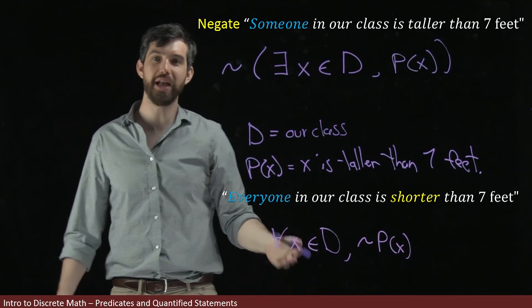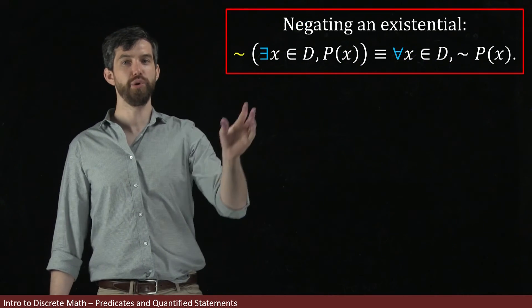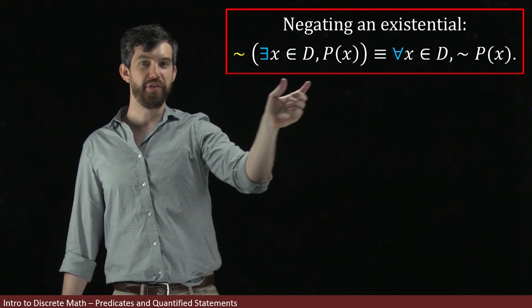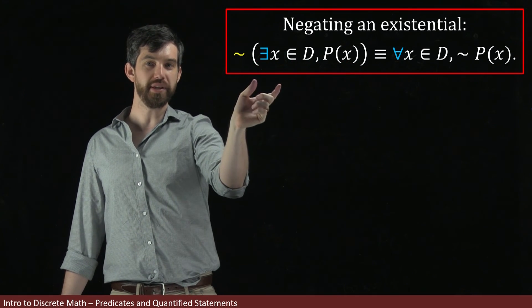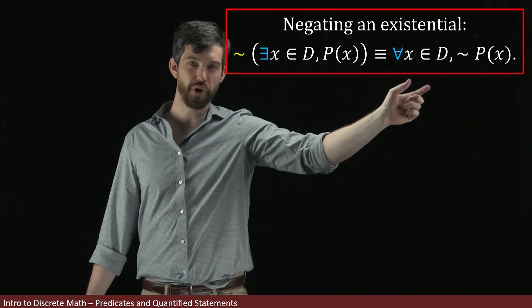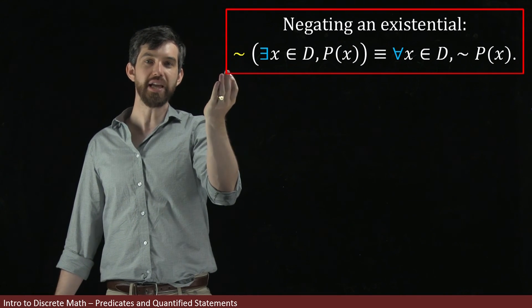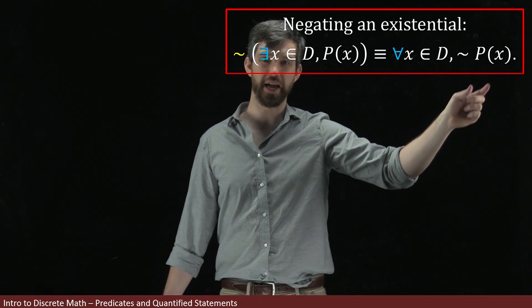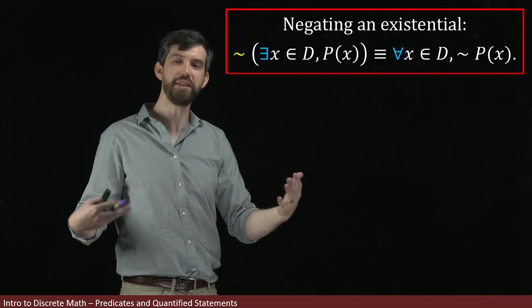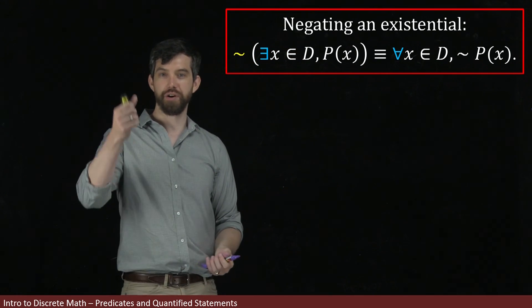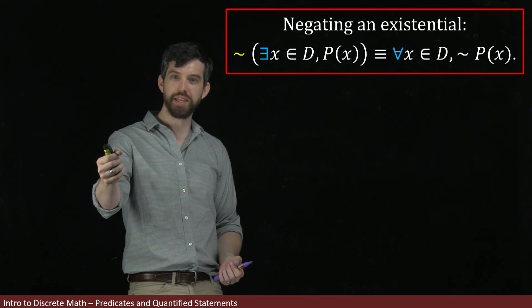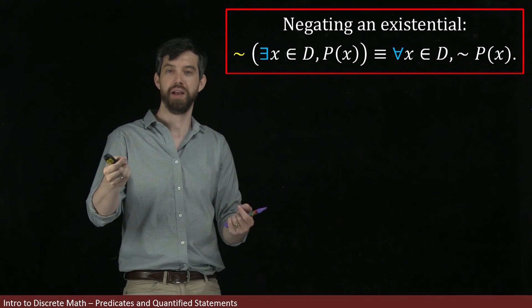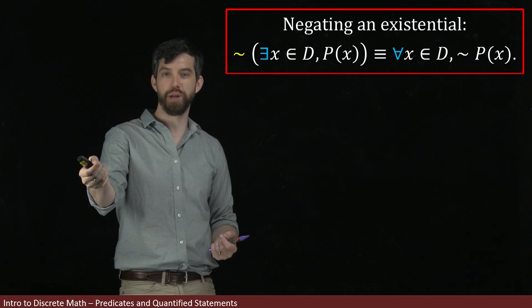To summarize: when negating an existential, there-exists changes to a for-all, and the negation ends up in front of the predicate. In other words, if it is not the case that there exists something with a property, then every single thing in the domain does not have that property.